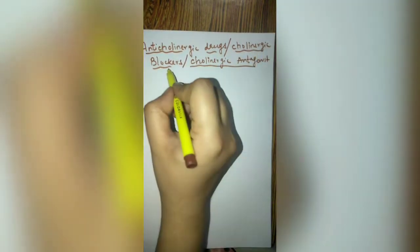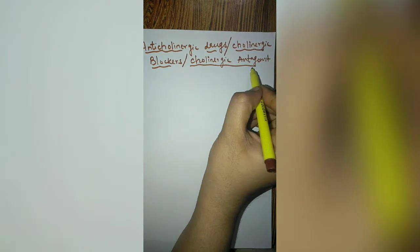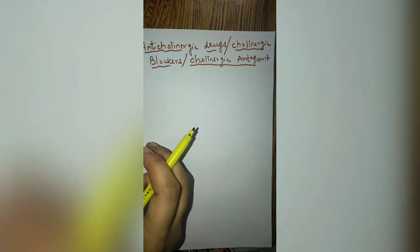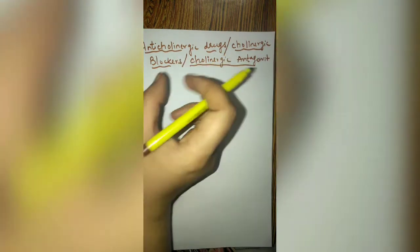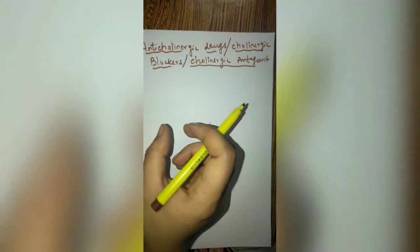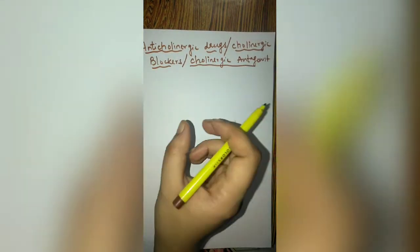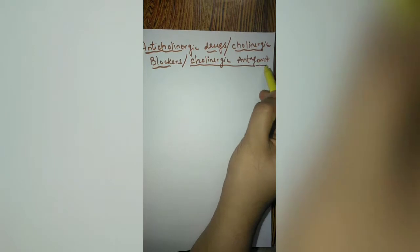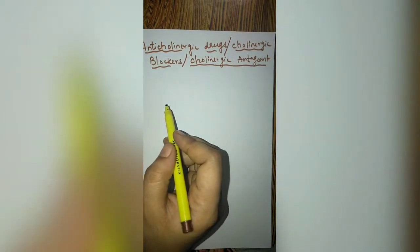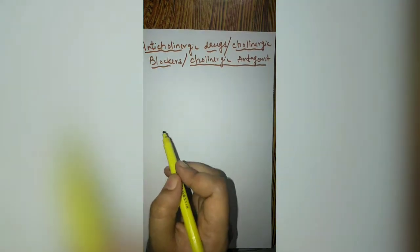When we say cholinergic blockers or cholinergic antagonists, it means something is related to receptors. Basically, these anticholinergic drugs mainly act by blocking the receptor — they are cholinergic receptor antagonists. Antagonists are agents that have affinity but no intrinsic activity.